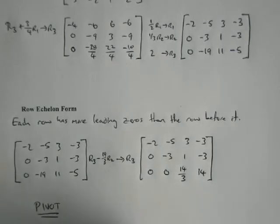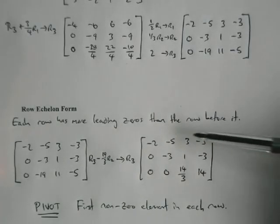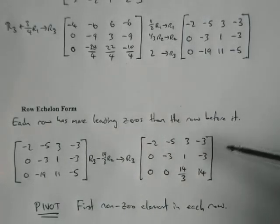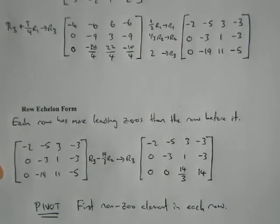Okay, so this matrix isn't quite in row echelon form. The second line has more leading zeros than the first line, but the third line doesn't have more than the second line. So if this 19 was zero, then we'd be in row echelon form, because you'd have no zeros at the start of that, one at the start of that, two at the start of that.